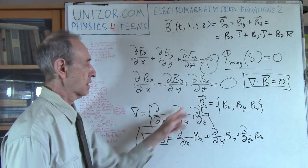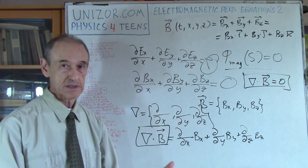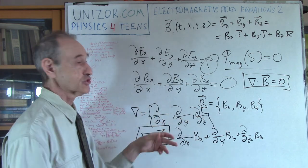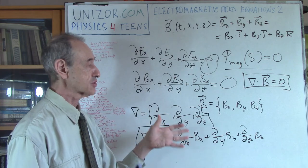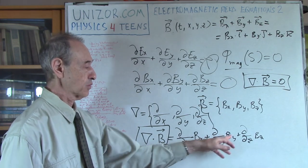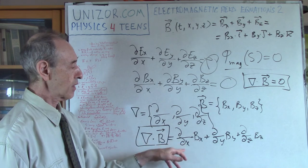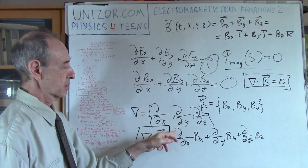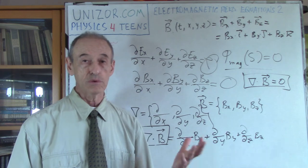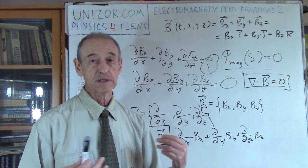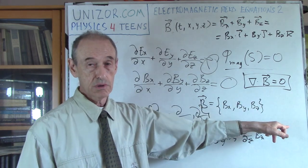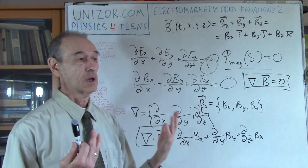Multiplication here means actually applying the operator — this is operator differentiation. So d/dx times BX actually means we are differentiating BX by dx, and by dy, etc. This is a convenient notation which represents the Gauss law for magnetic field in a really nice and concise form — the contemporary representation of the second Maxwell equation, which is Gauss law for magnetic field: ∇·B = 0.